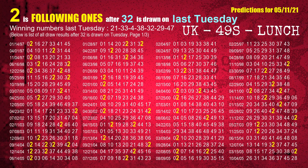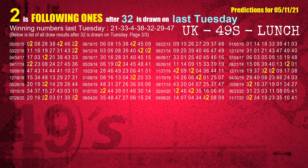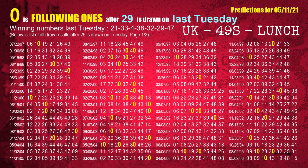The fifth winning number last Tuesday is 32. The most frequently following units digit is 2 when 32 is the winning number on last Tuesday. The sixth winning number last Tuesday is 29. The most frequently following units digit is 29 when 29 is the winning number on last Tuesday.